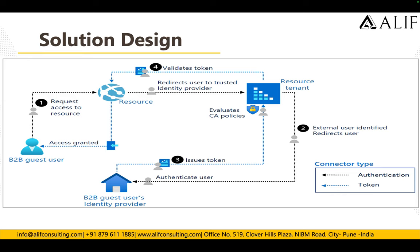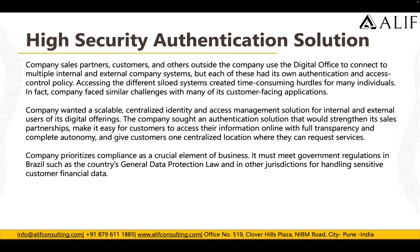There are three levels of validation in this process. The first validation occurs when the token is generated. The second validation comes when the conditional access policies are evaluated. The third validation is when the token is validated. Once the token is validated, the user gets access to their B2B applications.